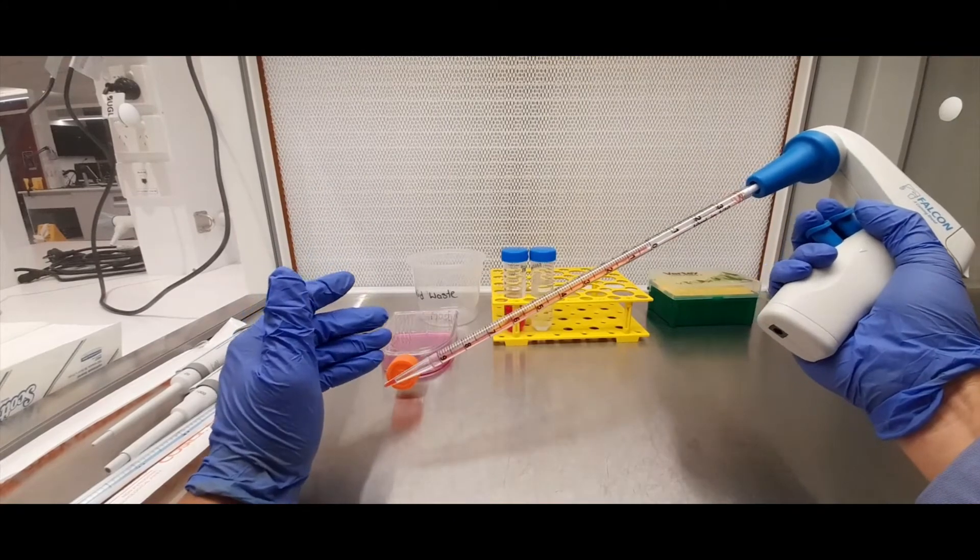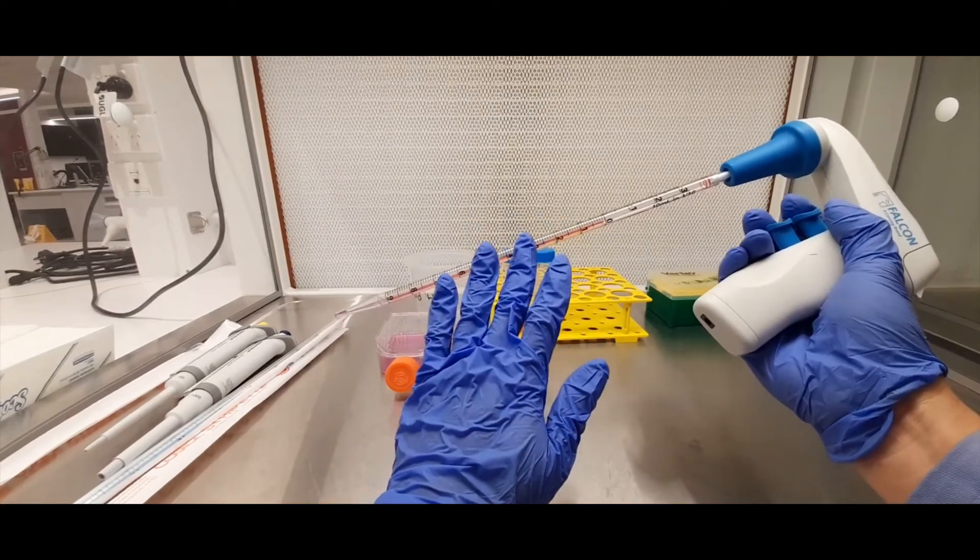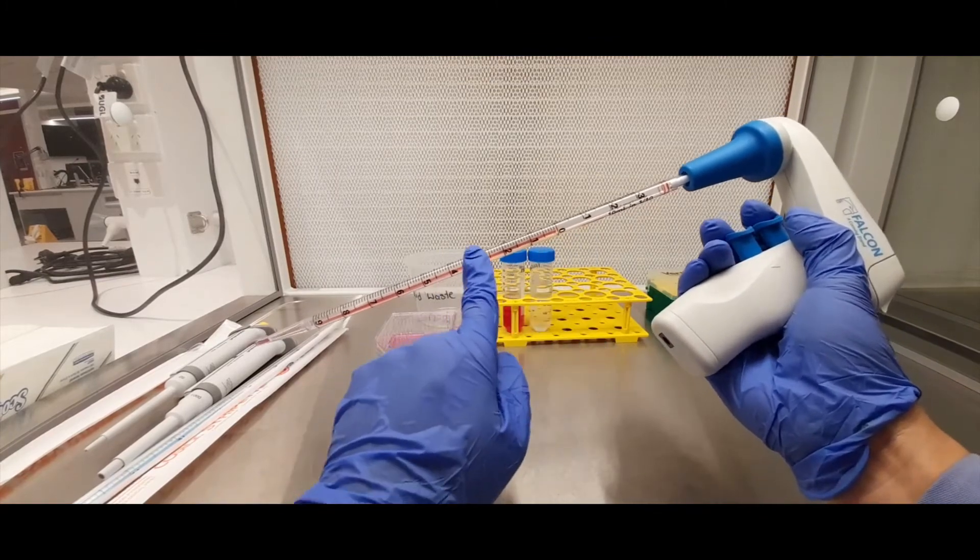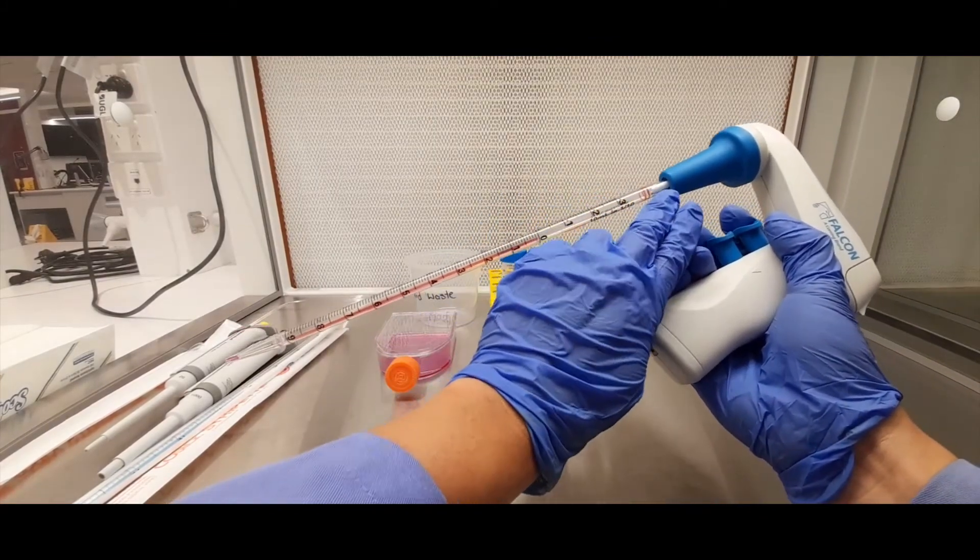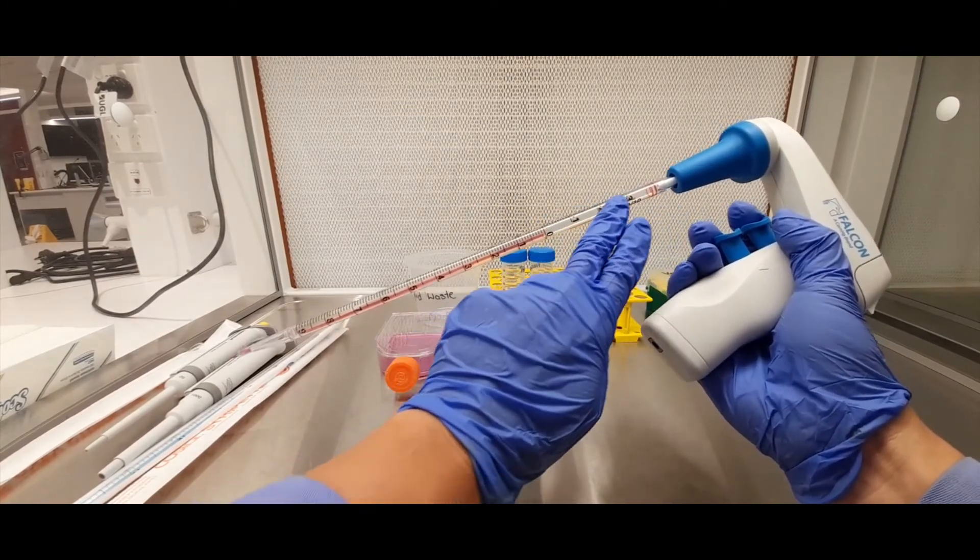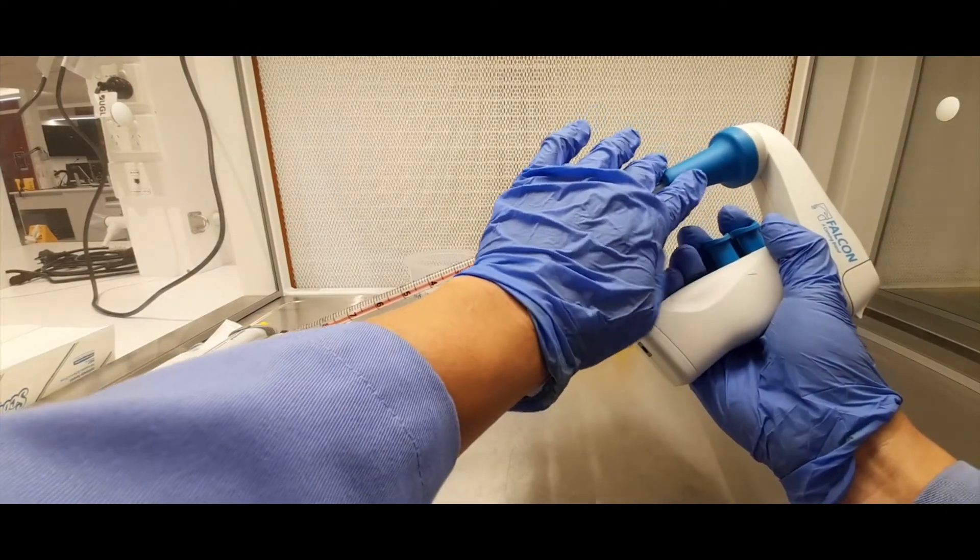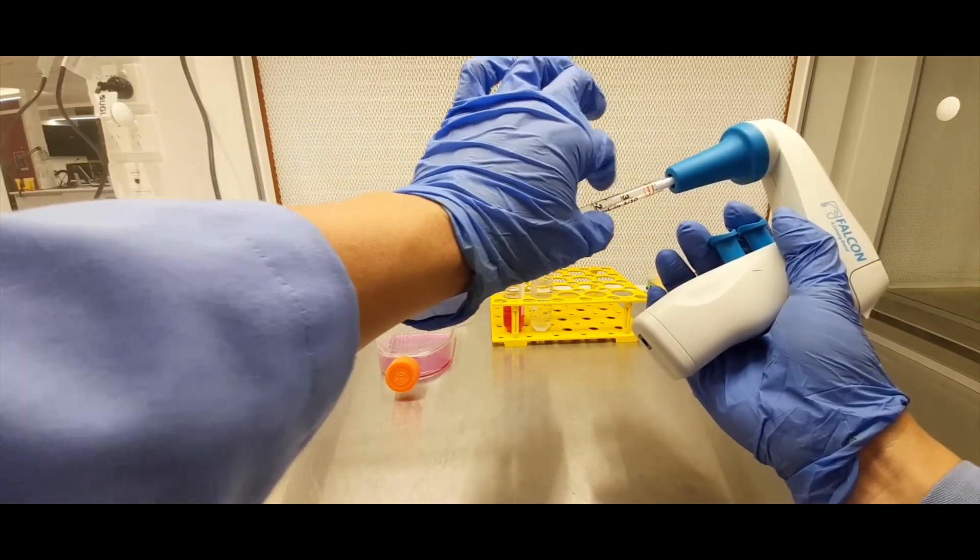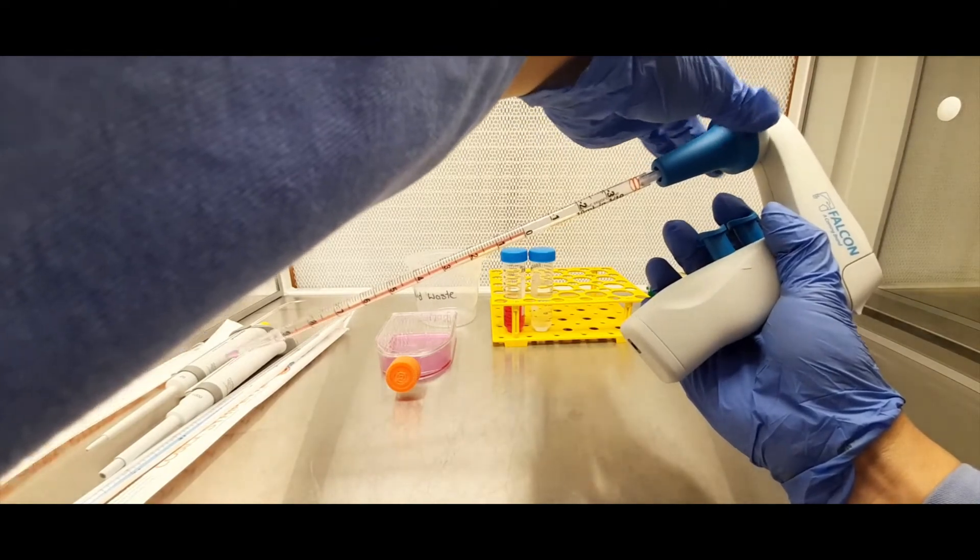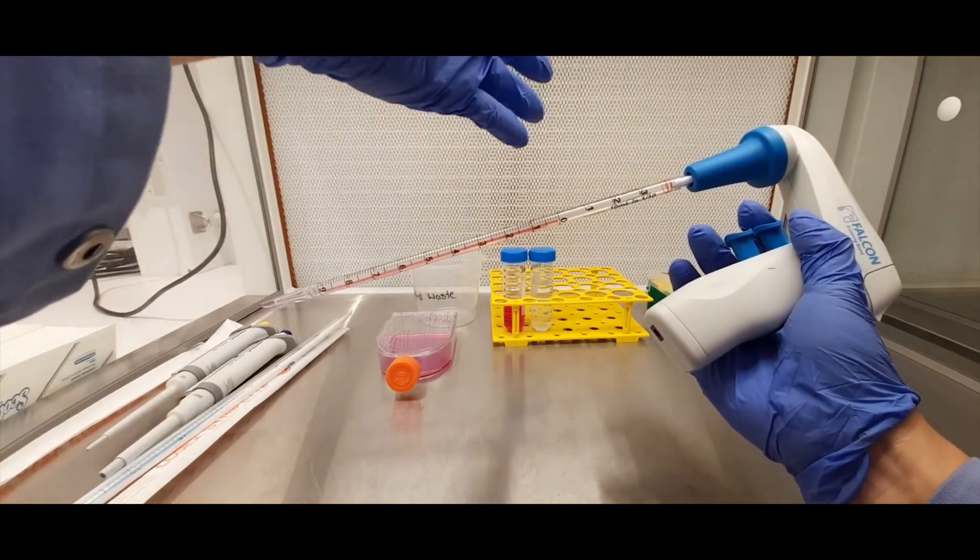One thing I forgot to mention was that when you're drawing up liquid into this serological pipette, just be mindful that you're watching the level of that volume of that liquid as it's being drawn up. Here you can see there's a little filter, a little cotton bud here that's a filter, and that's designed to stop liquid from moving past that point into the barrel of this pipette aid. So this pipette aid is not designed to draw liquid up into this barrel. If you draw it up into this barrel you will block this up and damage it, and then this will become inoperable and we'll have to take it away for servicing.